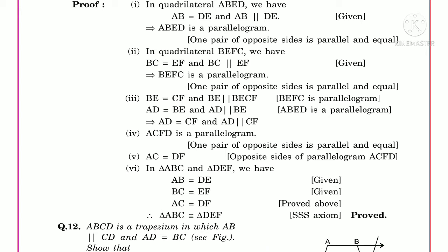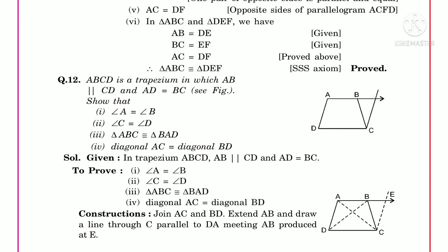For number four, since AD equals CF and AD is parallel to CF, ACFD is a parallelogram, and its opposite sides are equal and parallel, so AC equals DF. For the sixth proof, in triangles ABC and DEF: AB equals DE (given), BC equals EF (given), and we proved AC equals DF. Since all three sides are equal, by the Side-Side-Side congruence rule these two triangles are congruent.